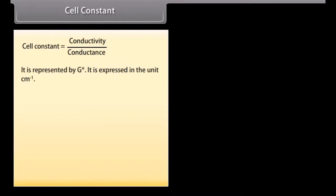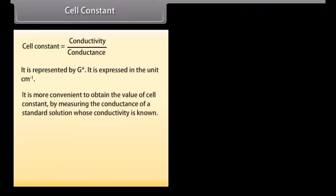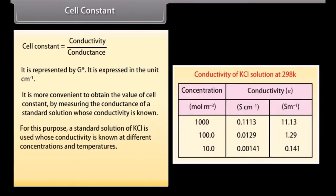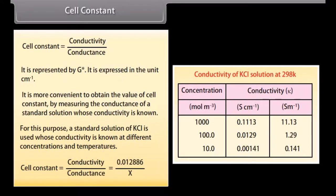Cell constant. Cell constant = conductivity / conductance. It is represented by G* and expressed in the unit cm⁻¹. It is more convenient to obtain the value of cell constant by measuring the conductance of a standard solution whose conductivity is known. For this purpose, a standard solution of KCl is used whose conductivity is known at different concentrations and temperatures. Cell constant = 0.012886 / X. Once the cell constant is known, the conductivity can be calculated from the measured conductance or measured resistance of the electrolytic solution.